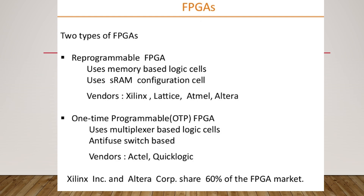We have two types of FPGAs. One is reprogrammable FPGA and another one is one-time programmable FPGA. In reprogrammable FPGA, it is based on memory — we use the FGRAM memory with some basic logic. Whereas in one-time programmable FPGA, the basic logic is based on the multiplexer, and it also uses the antifuse, because it is one-time programmable, so it uses antifuse-based programming technology.